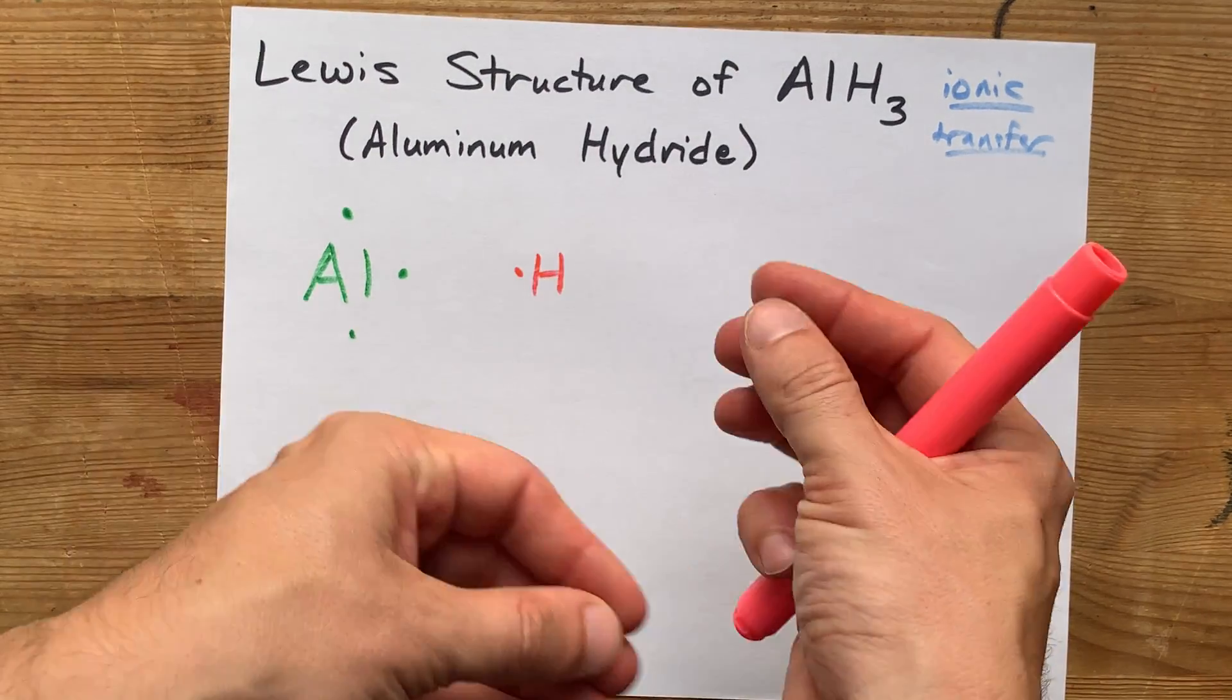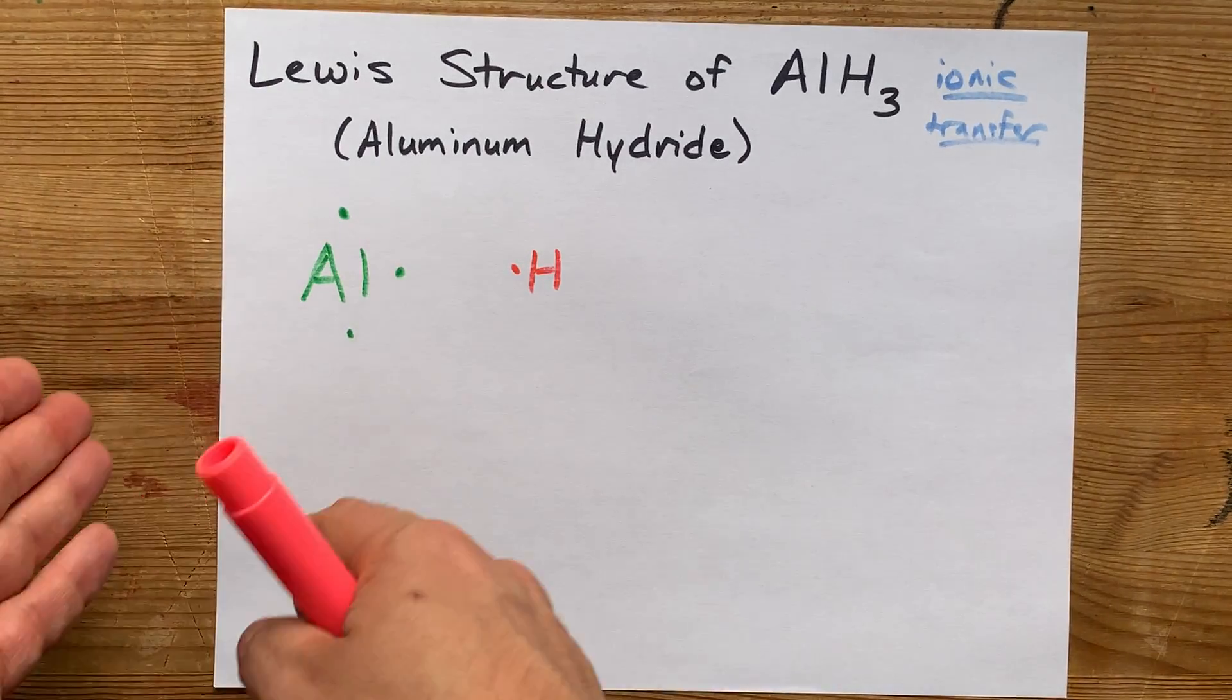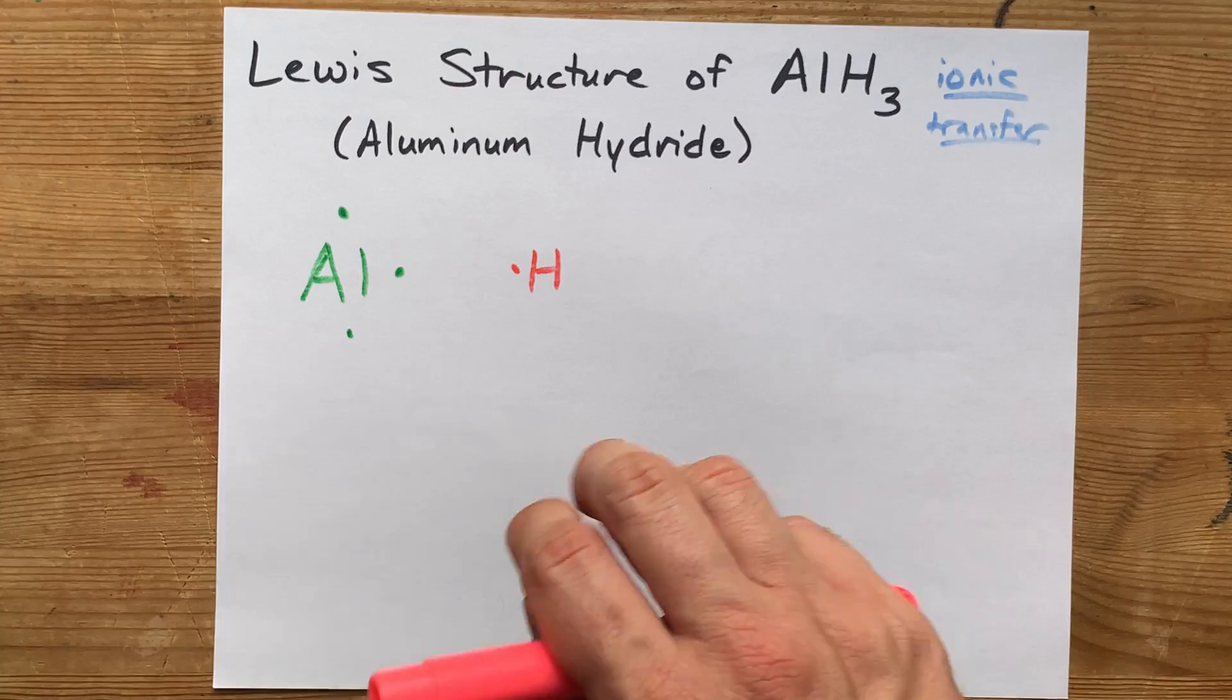Hydrogen does not use the octet rule. It uses something called the doublet rule. It is happy with two electrons around it, not eight.